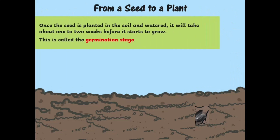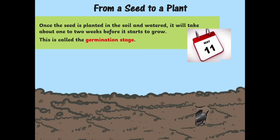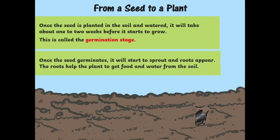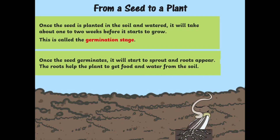Once the seed is planted in the soil and watered, it will take about 1-2 weeks before it starts to grow. This is called the germination stage. Once the seed germinates, it will start to sprout and roots appear. The roots help the plant to get food and water from the soil.